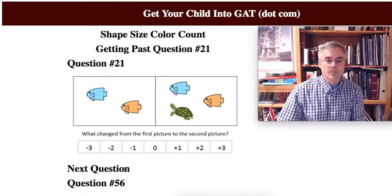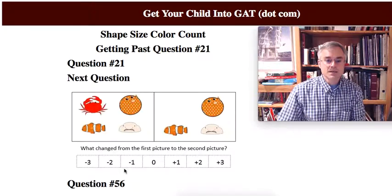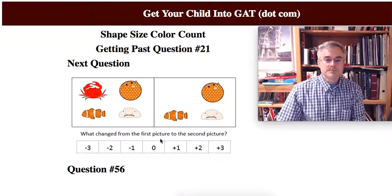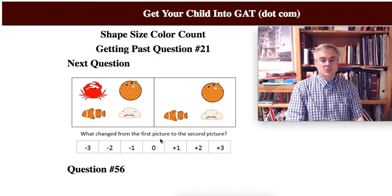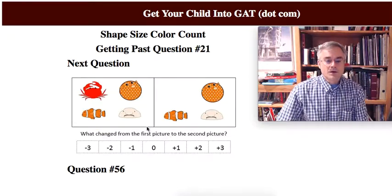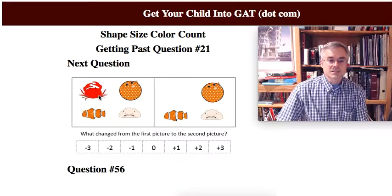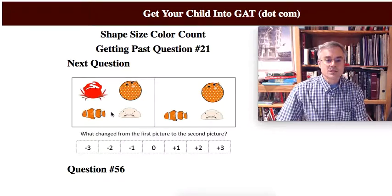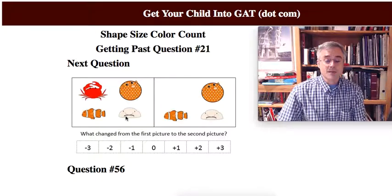Now the problems double up in this section, and on the same page we have the next problem. Once again we're at a party with some fish. So we have a crab, a blowfish, a clownfish, and my personal favorite which is a blobfish. How many do we have? We have four.